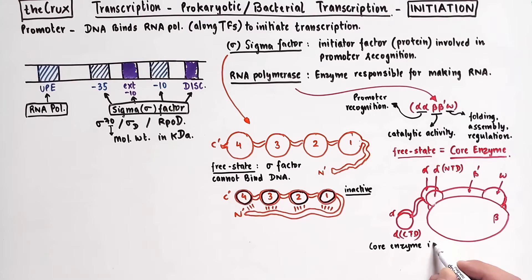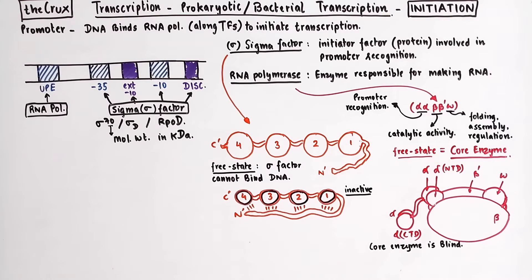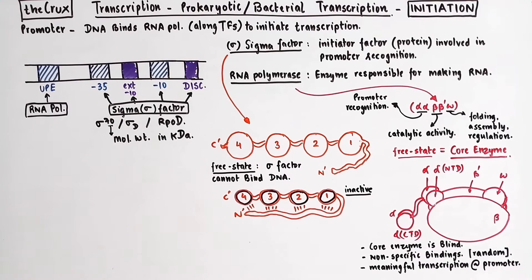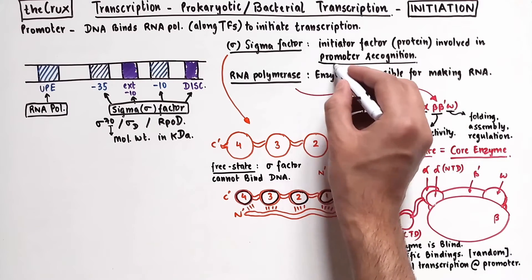Now keep in mind that the free state RNA polymerase is blind, which means that it will bind anywhere on the DNA. But for meaningful transcription, it needs to specifically bind to the promoter. So if both sigma factor and polymerase are indifferent towards promoters, how is then the promoter recognized?